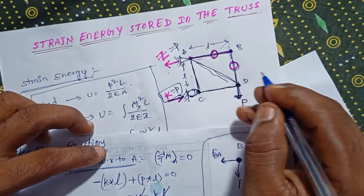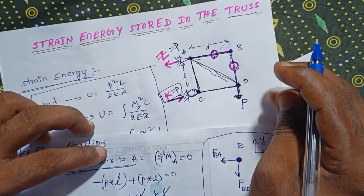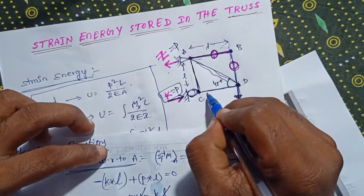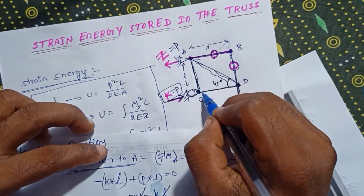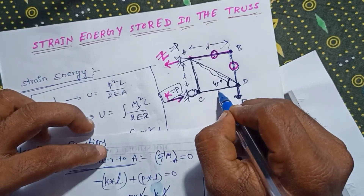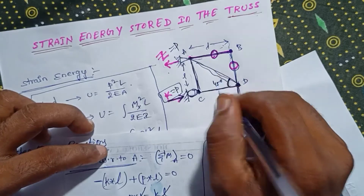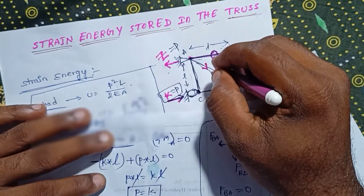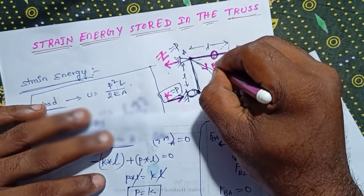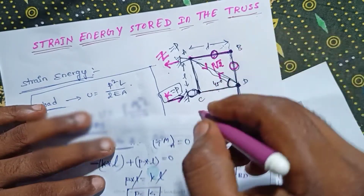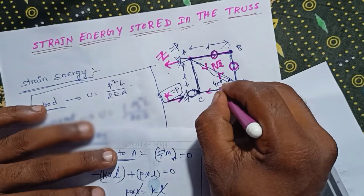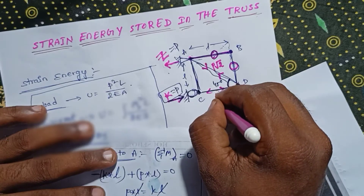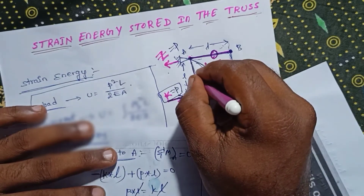Using the method of sections or method of joints, with the truss having 45-degree angles, the inclined member has length L root 2. By analyzing the geometry and equilibrium, the diagonal member carries a compressive force of P into root 2, and the horizontal member carries force P.